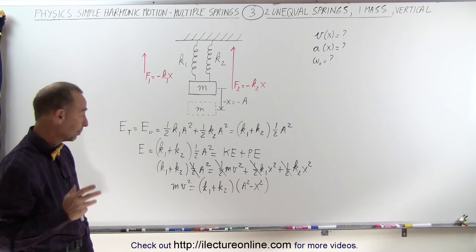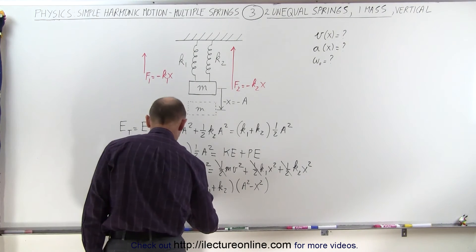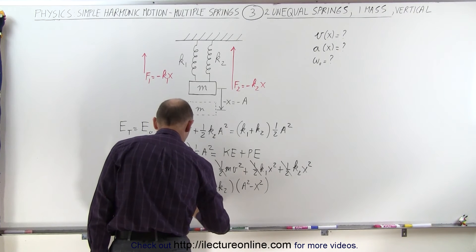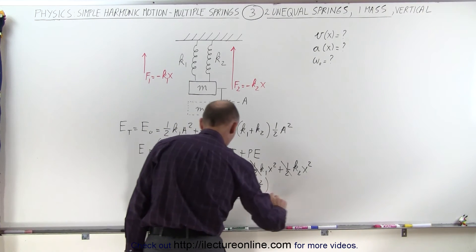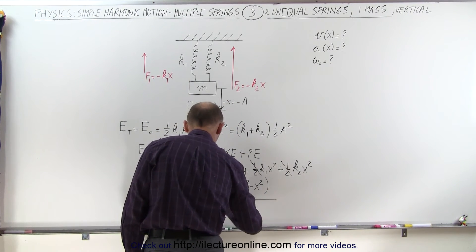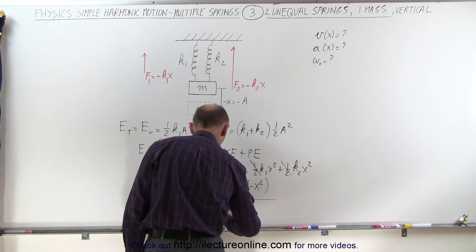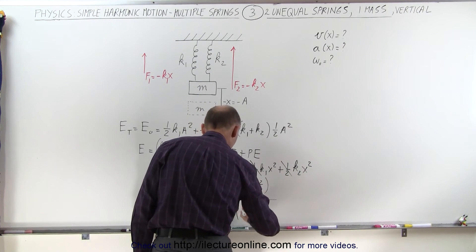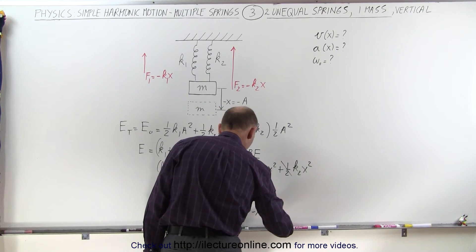Then we can divide both sides by m and take the square root, so we can say that velocity is a function of x is equal to the square root of the sum of the two constants, k1 plus k2 over m, times A squared minus x squared.